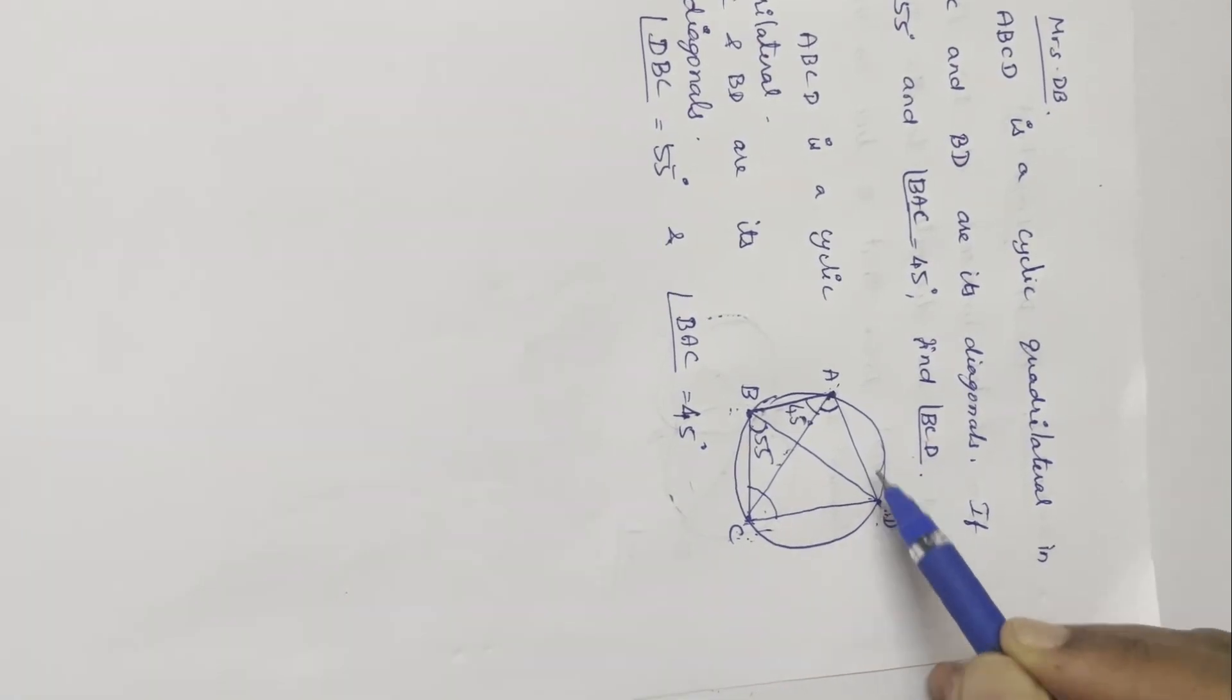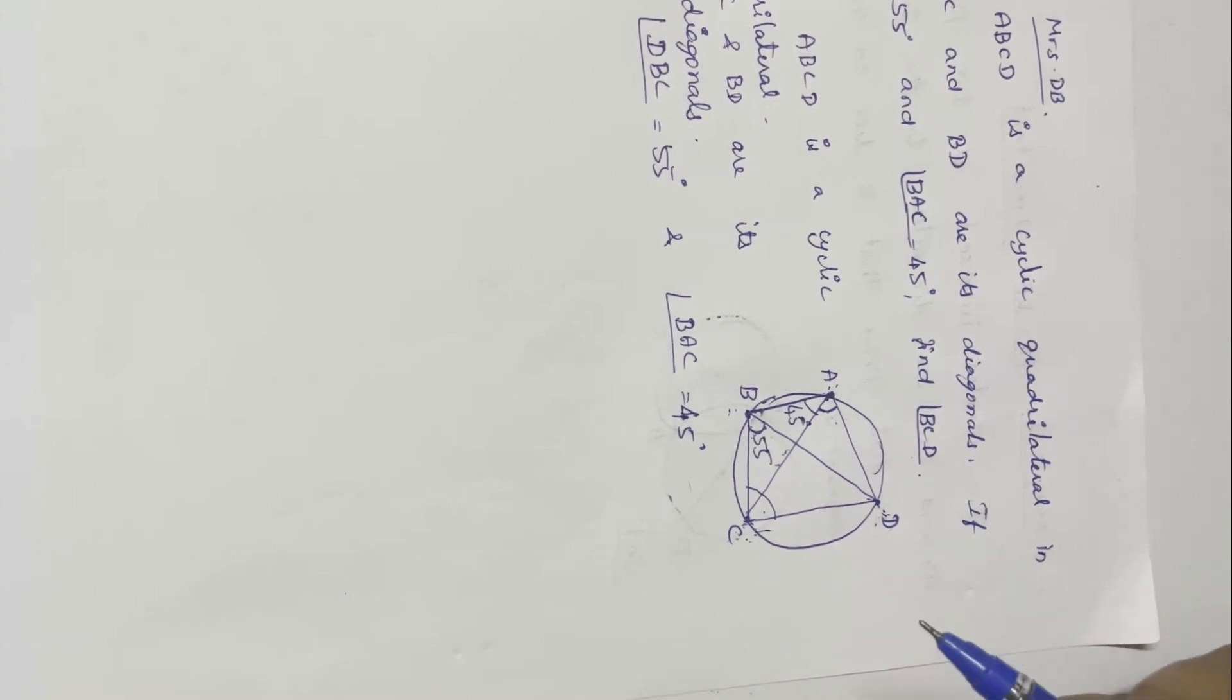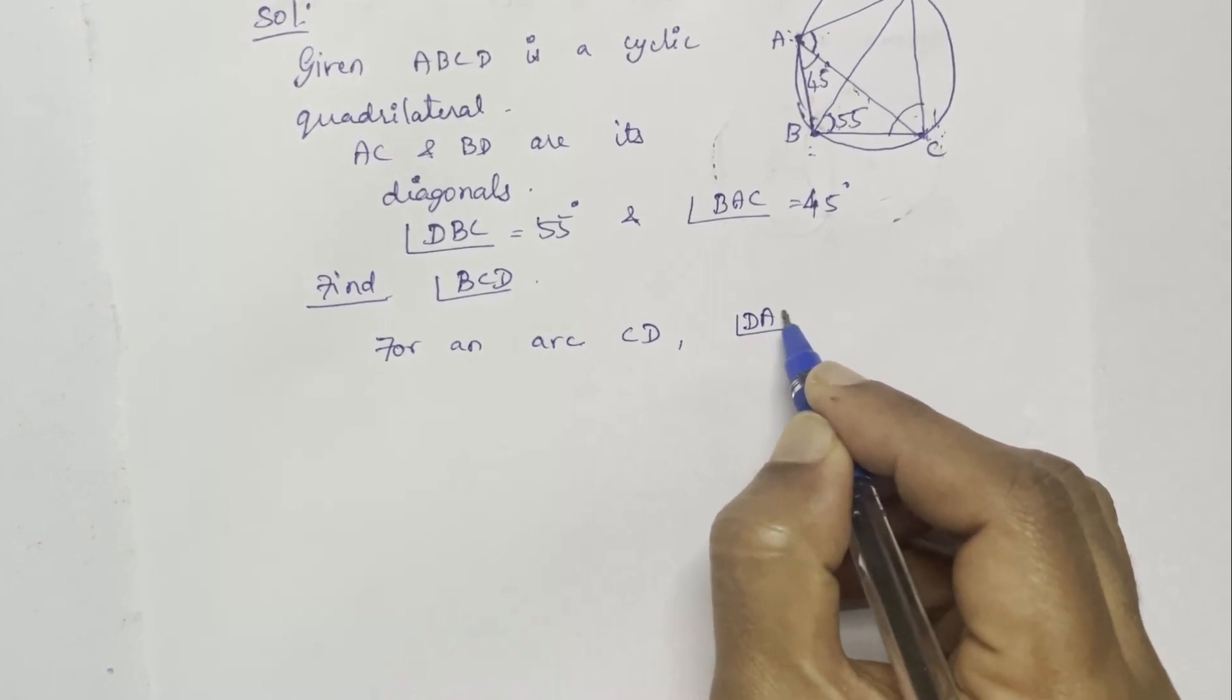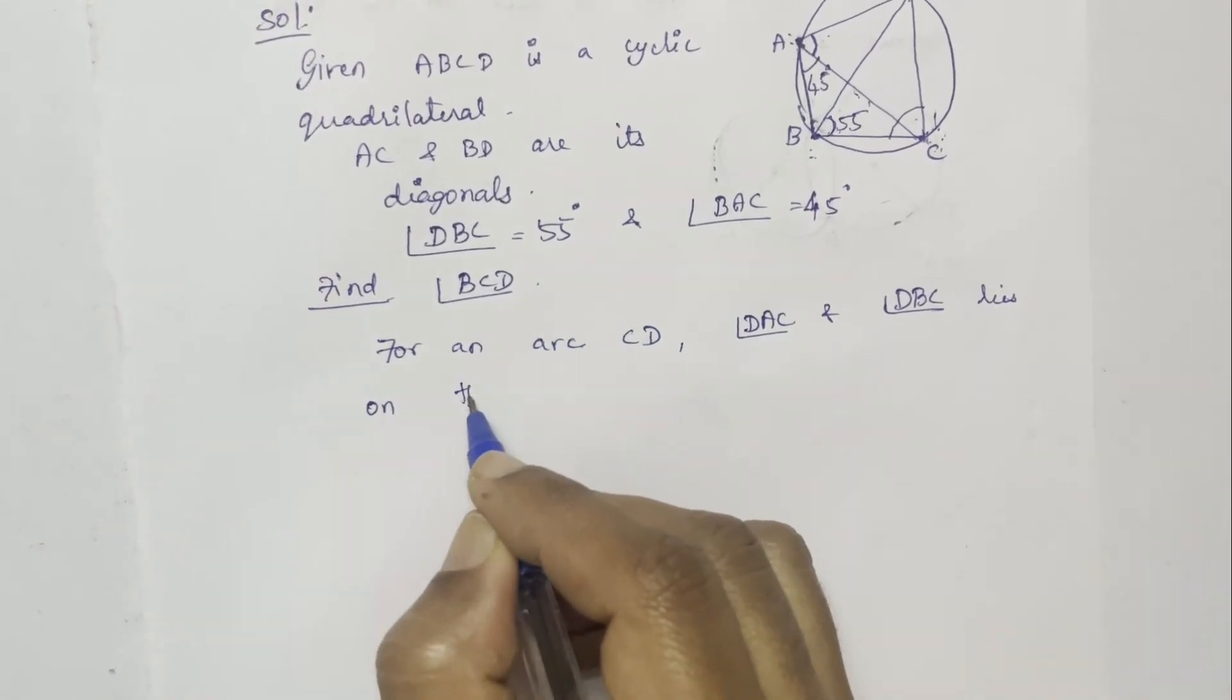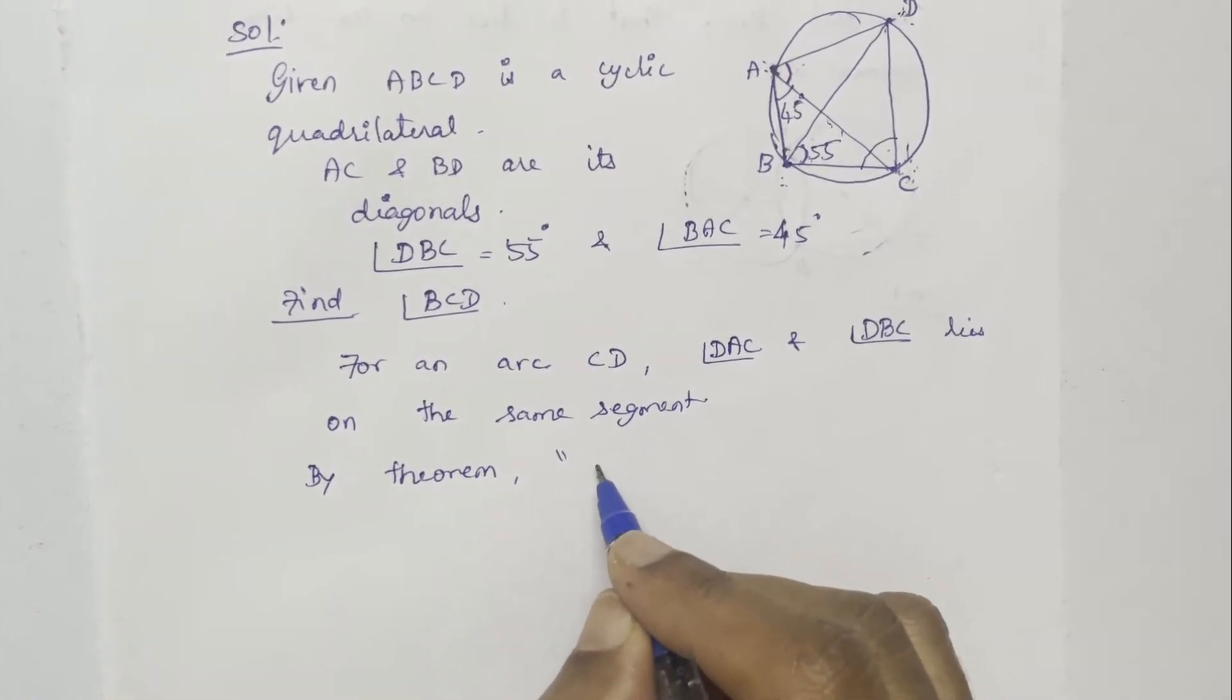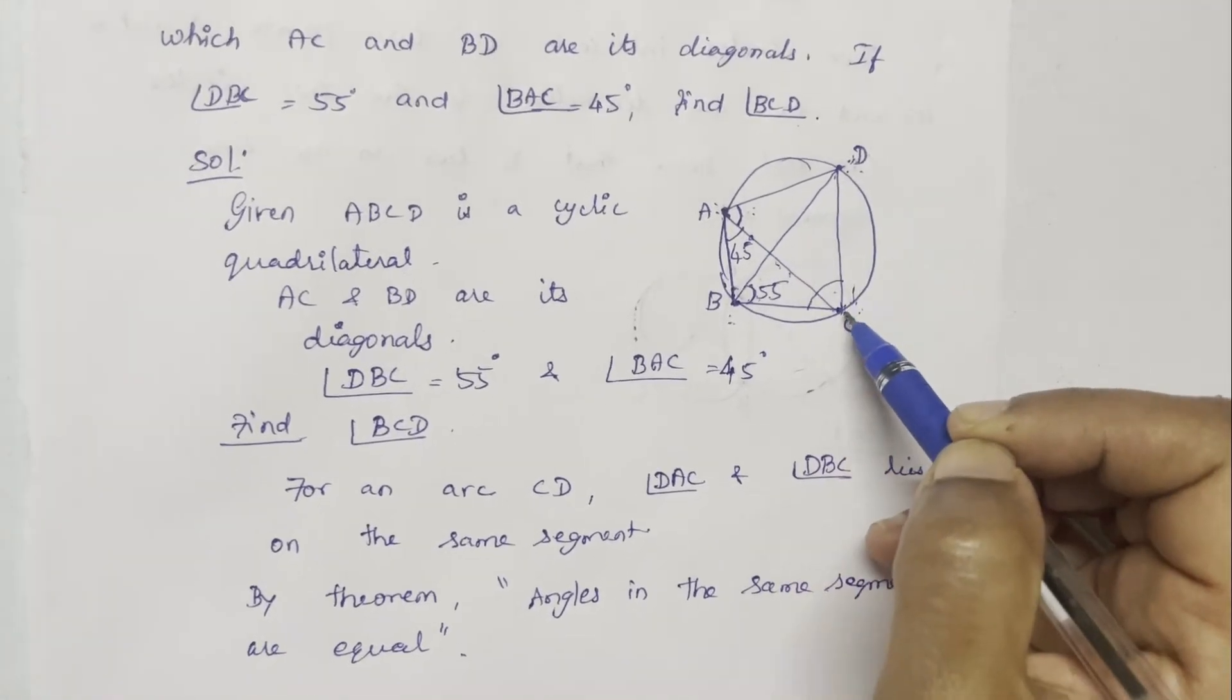For chord CD, angle DAC and DBC lie on the same segment. By theorem, angles in the same segments are equal. Therefore, angle DAC is equal to angle DBC.